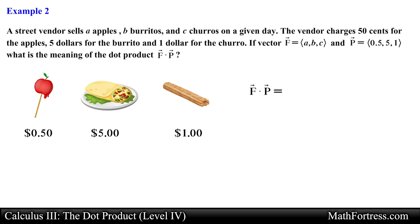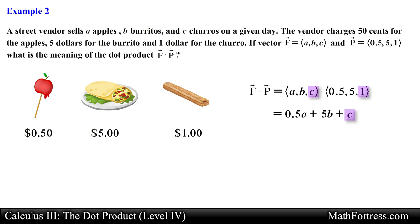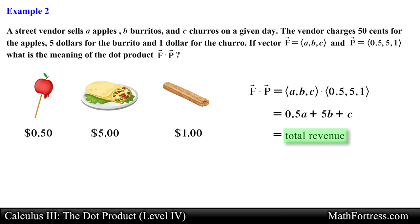Let's compute the dot product using the component definition, multiplying each of the vectors' components and adding them together. This expression represents the vendor's revenue for the day, since we are taking the number of each food item sold and multiplying it by its respective price. So this dot product is nothing more than the vendor's total revenue for the day.